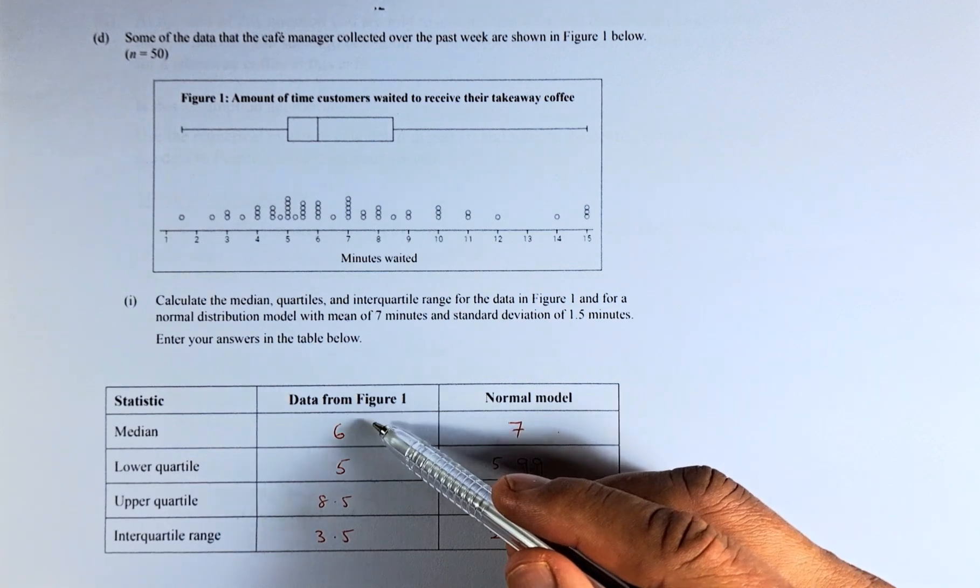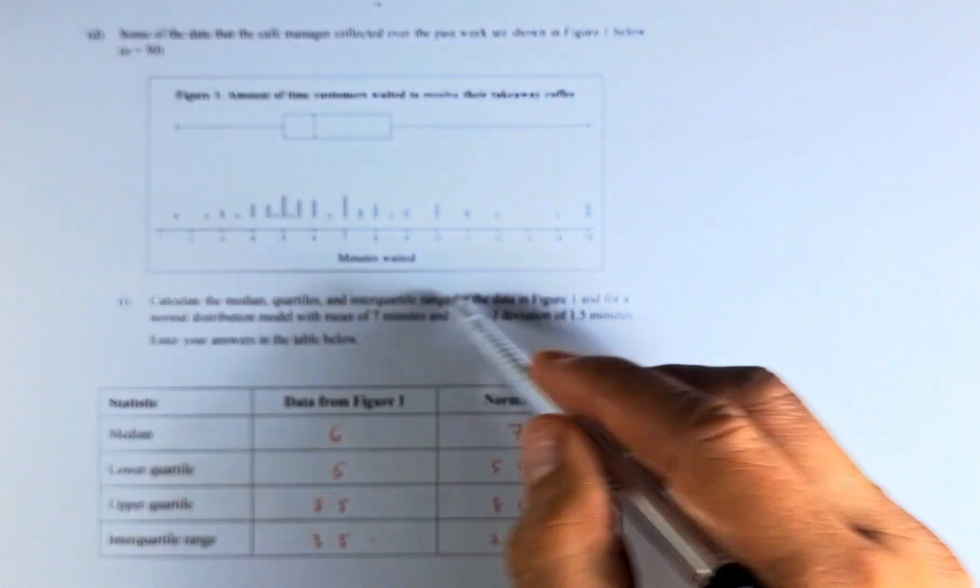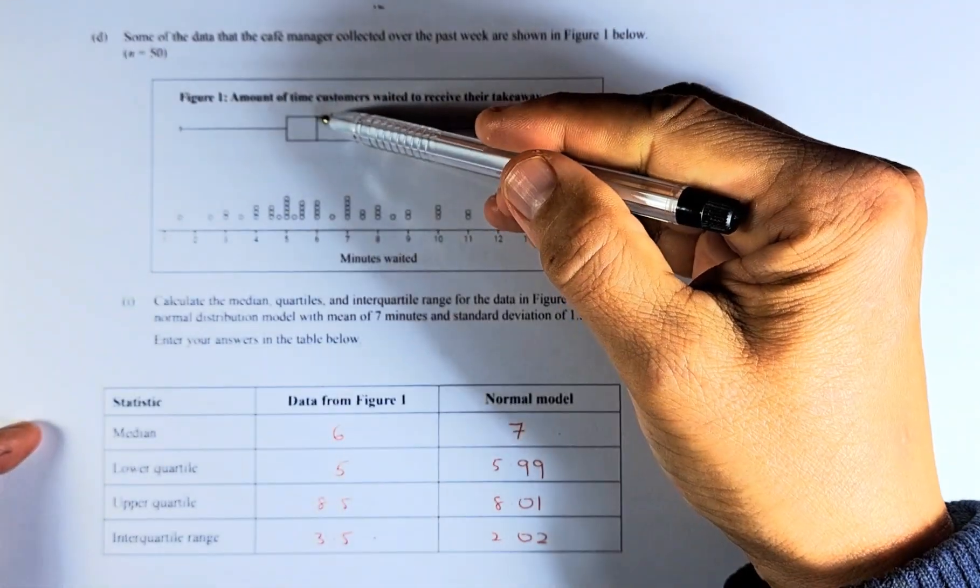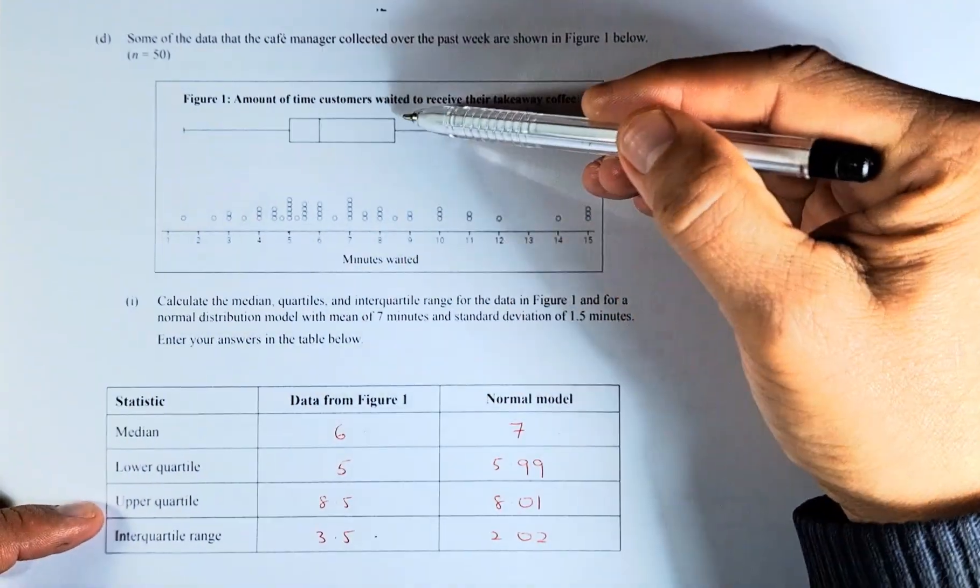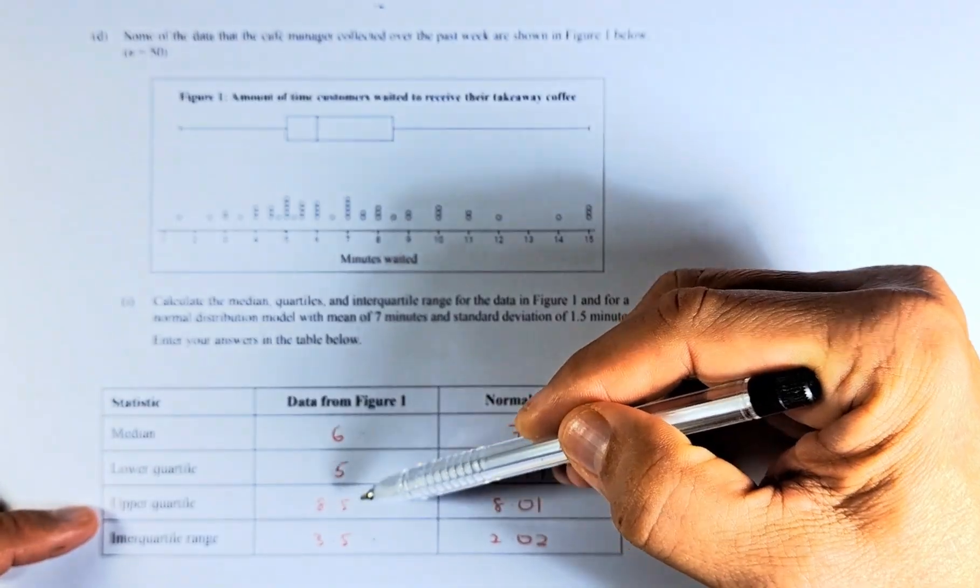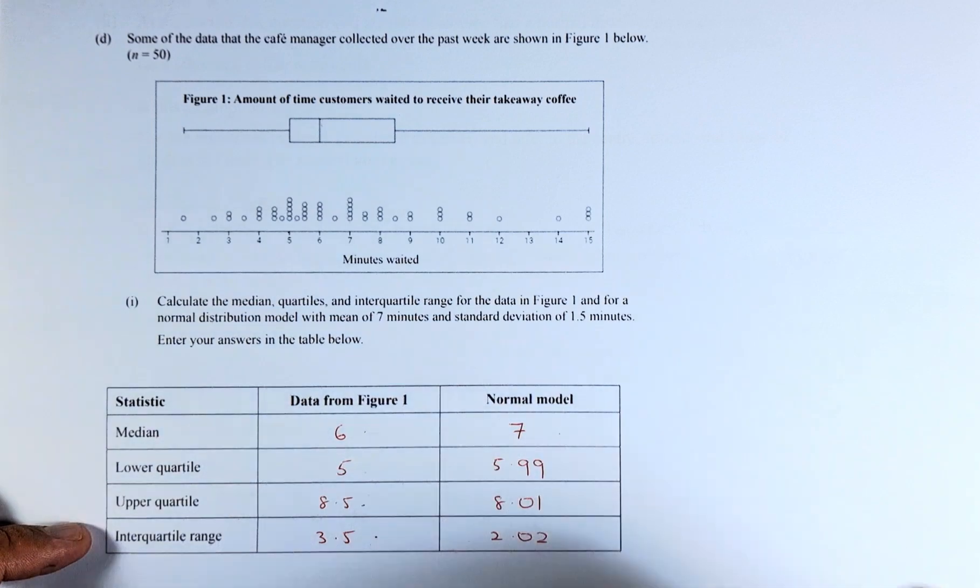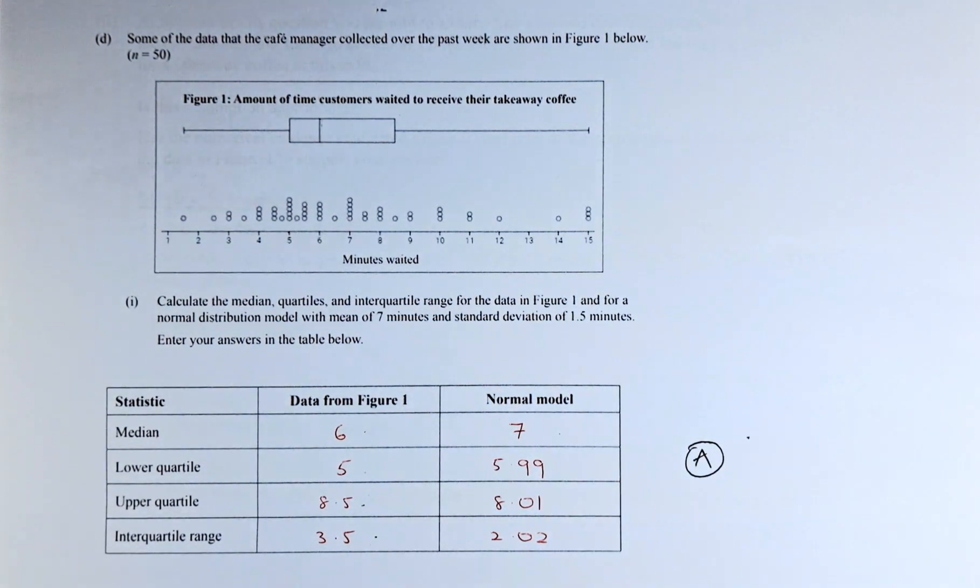Now to calculate the median, lower quartile, upper quartile, and interquartile range for the diagram shown above on Figure 1. To get the median, it's over here, it's about 6. Lower quartile is about here, which is about 5. Upper quartile is about in between 8 and 9, so it'll be 8.5. So the interquartile range is going to be 8.5 minus 5 and that gives 3.5, and that will give you a simple achieve for that question.